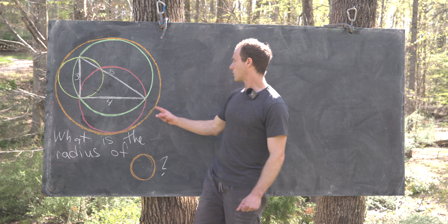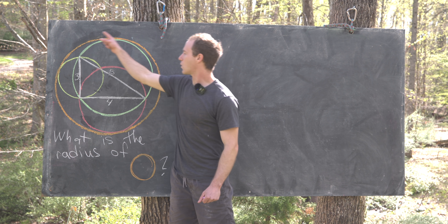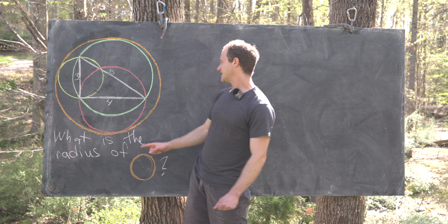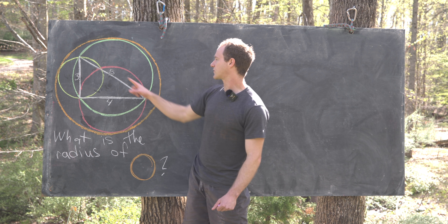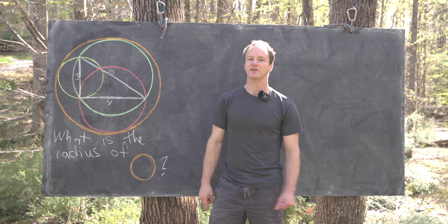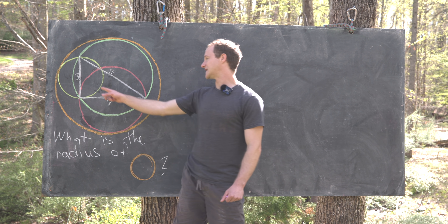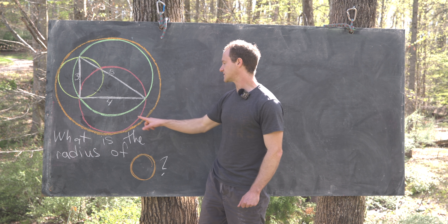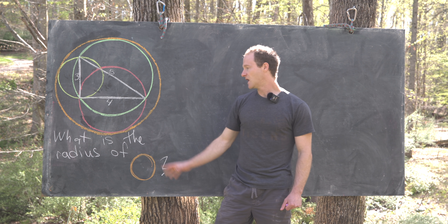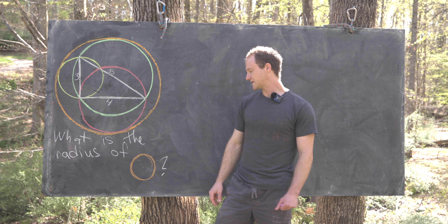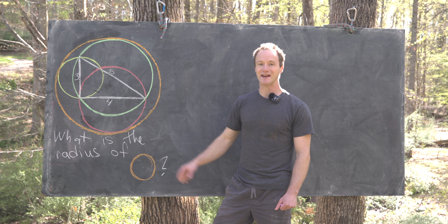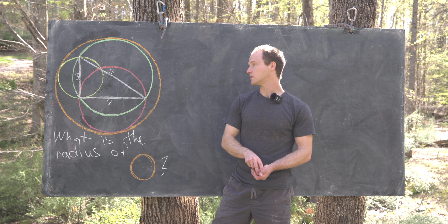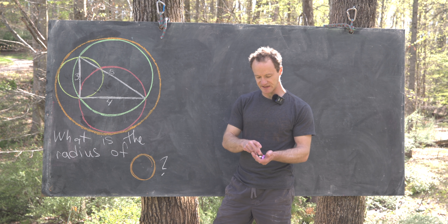Next, we form the unique orange circle which is tangent to all three of those circles — tangent to the yellow circle, the green circle, and the red circle. Our goal is to find the radius of this orange circle.